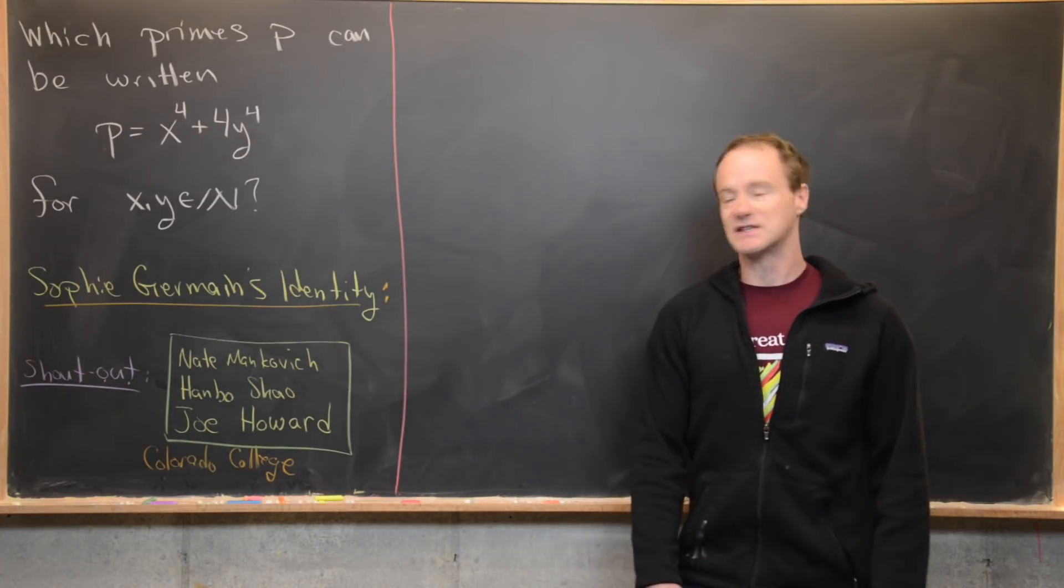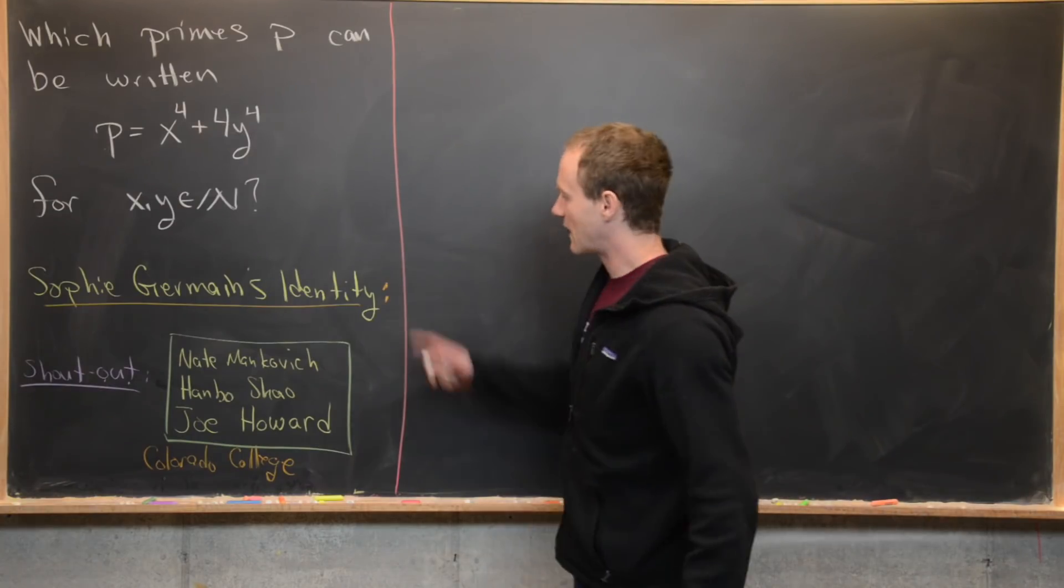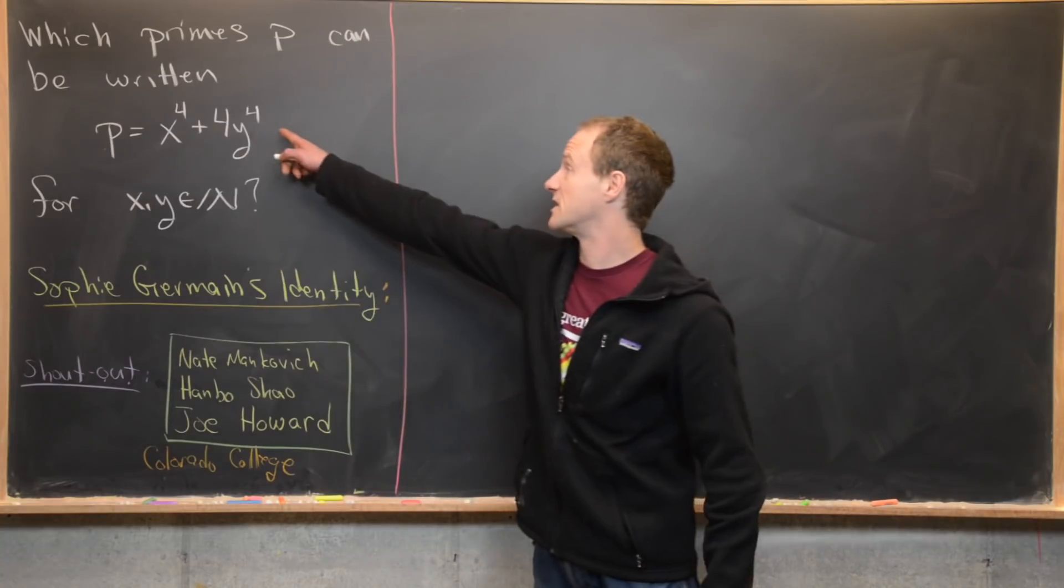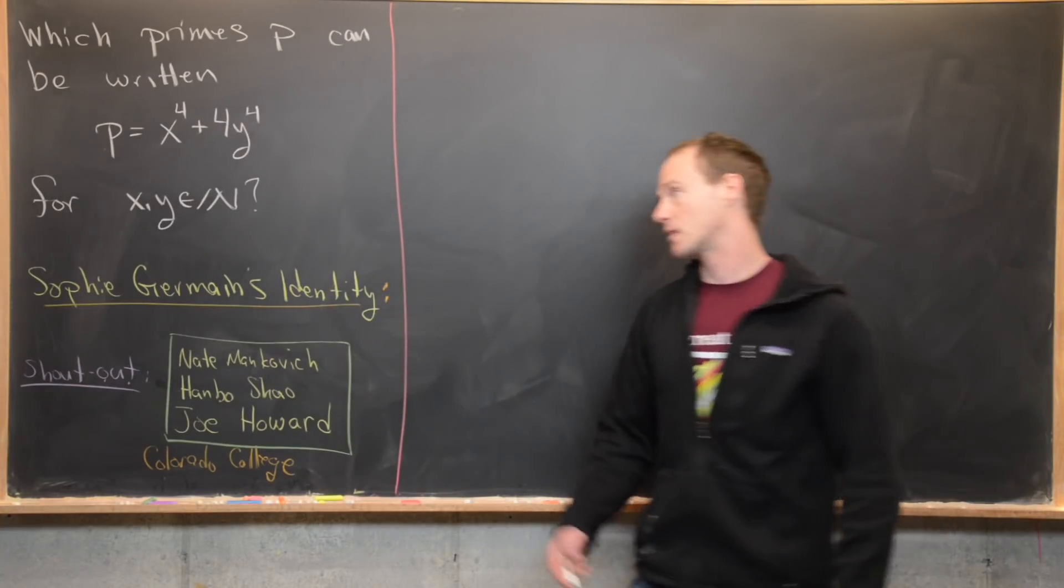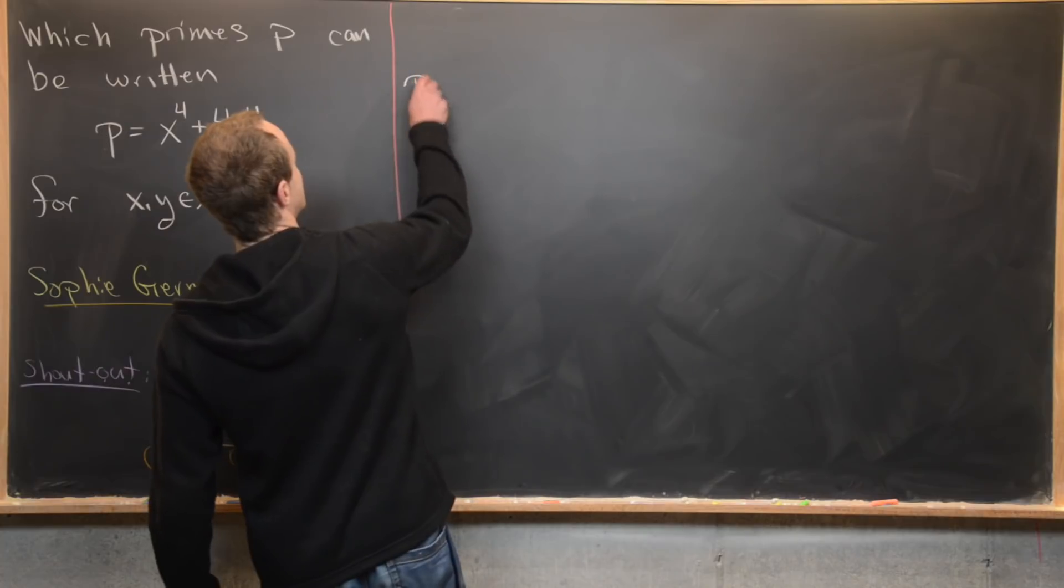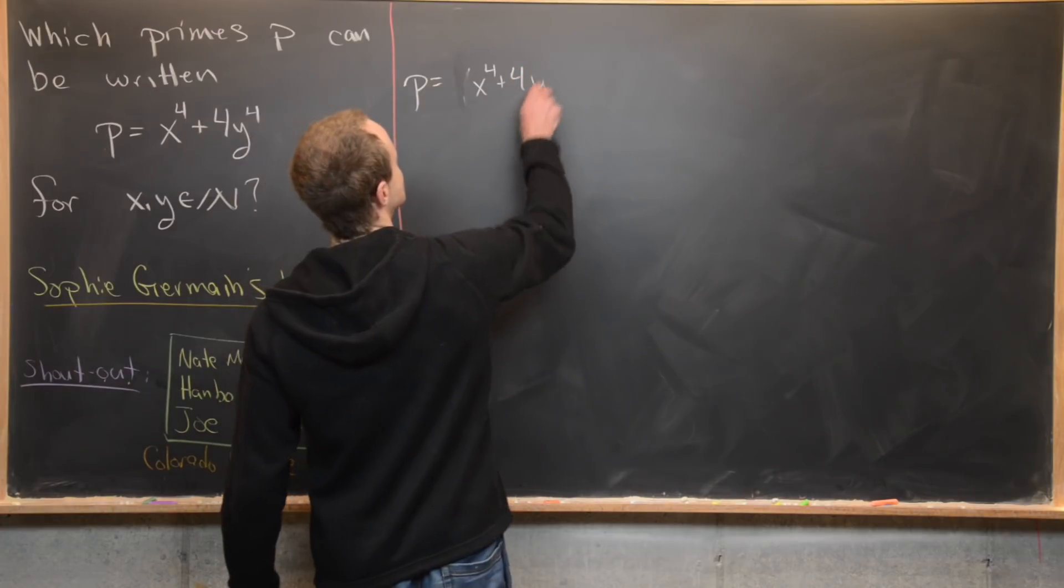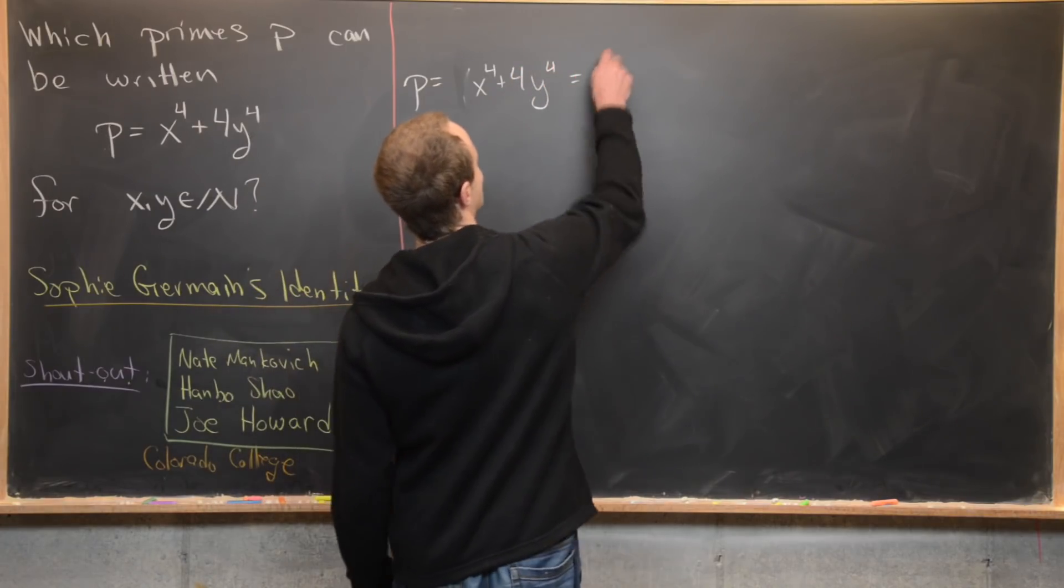Okay, so now let's jump into this problem. Like I said, we're going to use Sophie Germain's identity, which allows us to factor this quartic polynomial. We're going to take P, which is equal to x to the fourth plus four y to the fourth, and we're going to factor that.